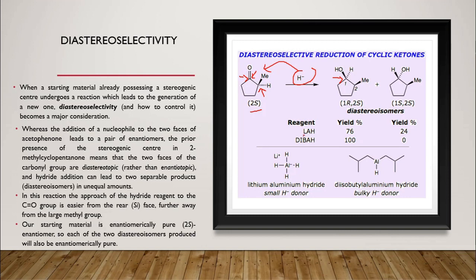When lithium aluminium hydride is used as a reagent, we end up with 76% of one particular diastereomer and 24% of the other. On the other hand, when diisobutylaluminium hydride, a bulky hydride donor, is used, we end up exclusively with 100% of one isomer. Diastereoselectivity therefore also depends on the nature of the reagent used.